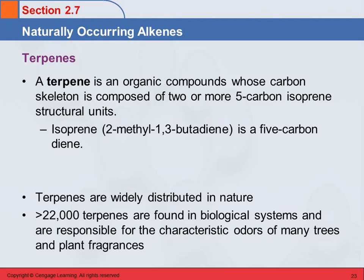Let's draw the structure of that. 1,3-Butadiene — well, butane has four carbons, so this is going to have four carbons: 1, 2, 3, 4. The 1,3 means there's a double bond at position 1 and at position 3. And 2-methyl means there's a methyl group on the second carbon. The book draws it a slightly different way, but it's the same thing — just a little prettier perhaps.